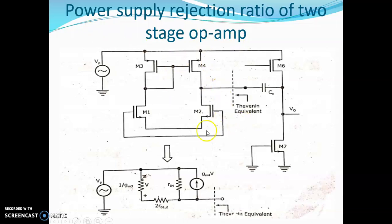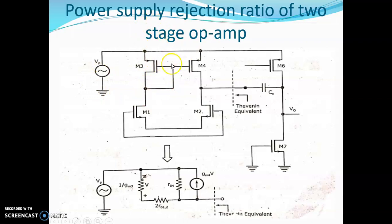We will be seeing the positive PSRR circuit. This is the positive PSRR circuit. First, we will be applying an AC source voltage to the supply, and then we are going to take the small signal analysis of this circuit. This is the 2-stage op-amp circuit. In order to derive the positive PSRR, we will be taking the AC signal and a small signal model of this 2-stage op-amp. You can note down this diagram — this is the small signal analysis.